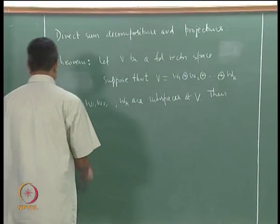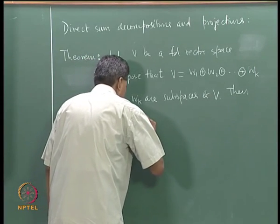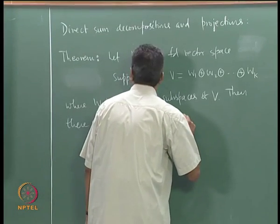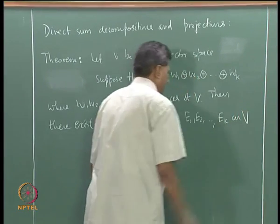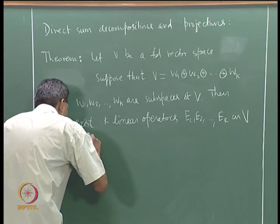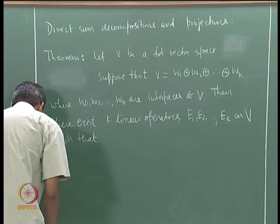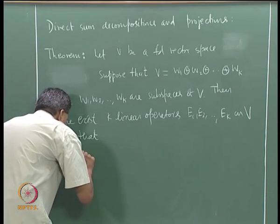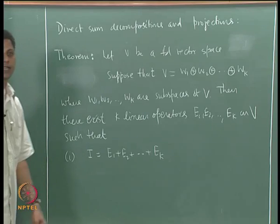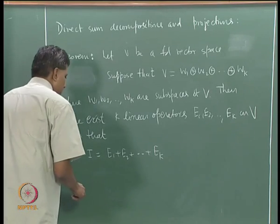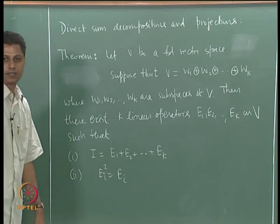The first part is: there exist k linear operators E1, E2, ..., Ek defined on V such that the following conditions are satisfied. The first condition is that the identity can be written as E1 plus E2 plus ... plus Ek — identity can be written as a sum of these projections. We are going to prove these are projections: Ei squared is Ei, that is Ei is a projection.